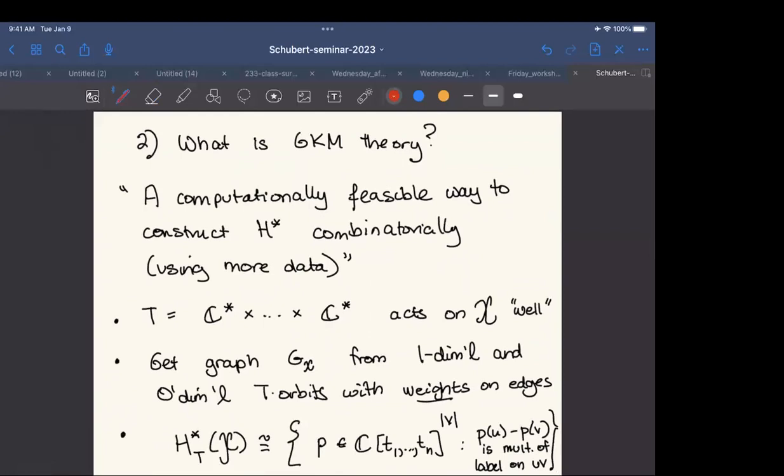We'll say a little bit more once I've said what is GKM theory. I think of GKM theory as a computationally feasible way to construct cohomology combinatorially. A priori, I'm going to start with more data. But at the end of the day, I will have a module basis that is also a cohomology basis. And I will have some fairly routine mechanism to go from the equivariant cohomology to the ordinary cohomology. It only works if you start with varieties that are relatively well behaved. This is usually the world in which I live.